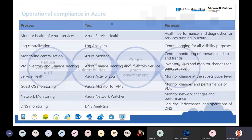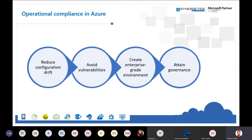For operational compliance, there are four key pillars. First is reducing configuration drift — when setting up a virtual machine or moving a workload from on-premises to Azure, organizations have standard policies for how machines should be configured, but configuration drift can still occur between environments. Second is avoiding security vulnerabilities — Azure provides a list of vulnerabilities and security information through Security Center and other tools.